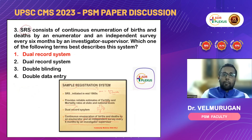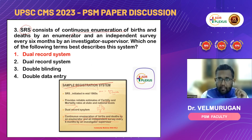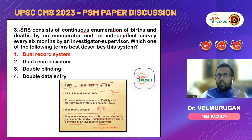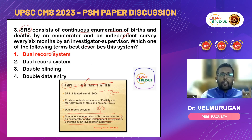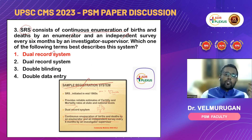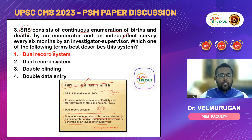Next question — SRS. What is SRS? It is nothing but the Sample Registration System. It consists of continuous enumeration of births and deaths. Two people are involved: one is an enumerator, and another is an independent surveyor who does surveys every six months. So SRS is a dual record system — one record by the enumerator and another by the independent investigator-supervisor done six-monthly.